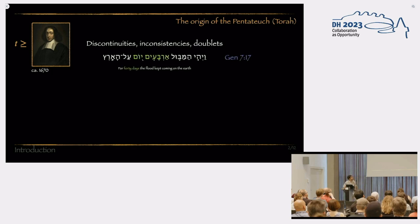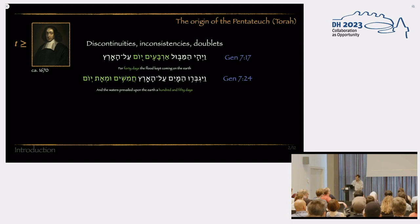As an example, I take you to Genesis 7:17, talks about Noah's flood, and the verse says, v'hiya mabul, arbaim yom ala'aretz, for 40 days the flood kept coming on the earth, and if we go but seven verses down the text, it's very close textually, we have another verse depicting the same event, v'igbaru hamaim ala'aretz, chamishim umeat yom, and the waters prevailed upon the earth 150 days.